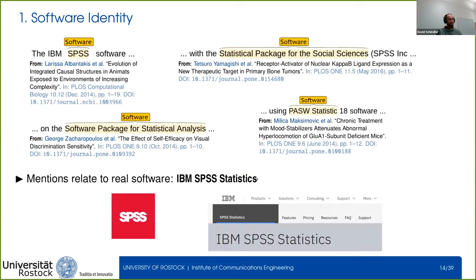This covers all information we extract about software aside from one major concept: the software identity. Every mention of software in a scientific article refers to one real-world software. Consider these four examples: the strings SPSS, 'Statistical Package for Social Sciences,' 'Software Package for Statistical Analysis,' and 'PASW Statistics' all refer to the same real-world software — IBM SPSS Statistics.